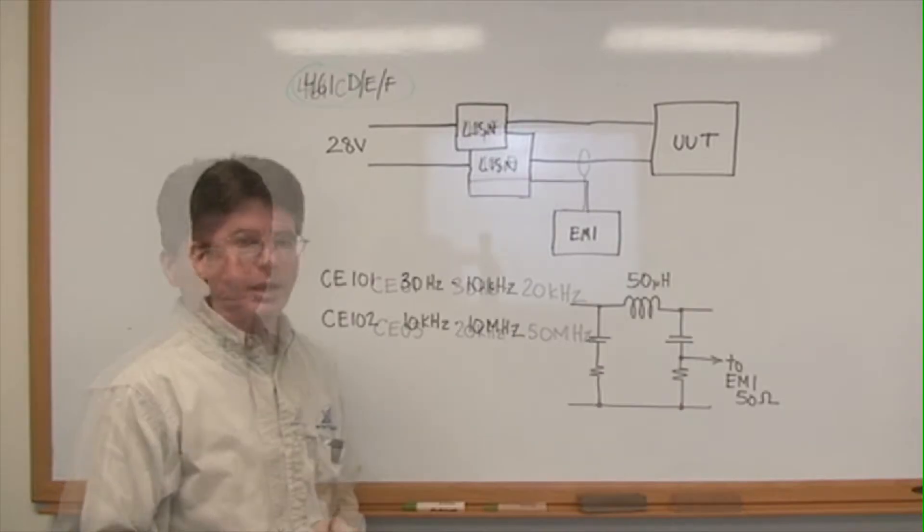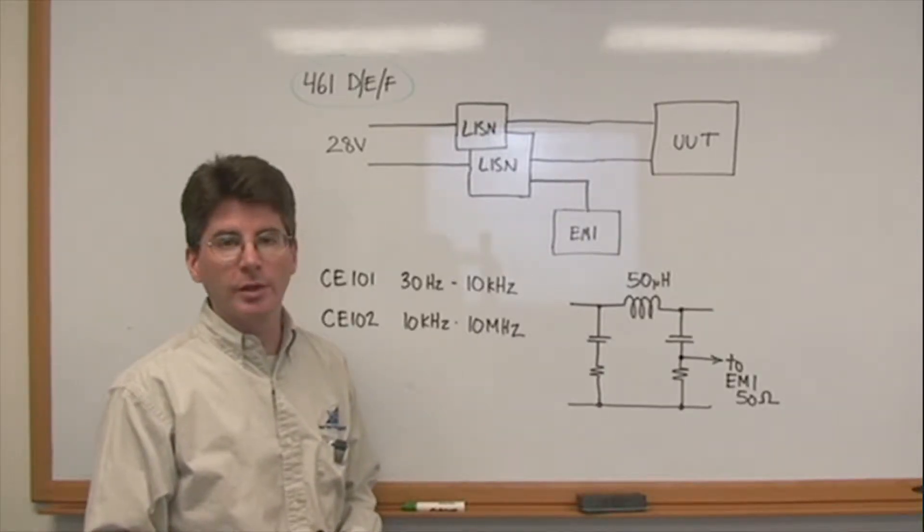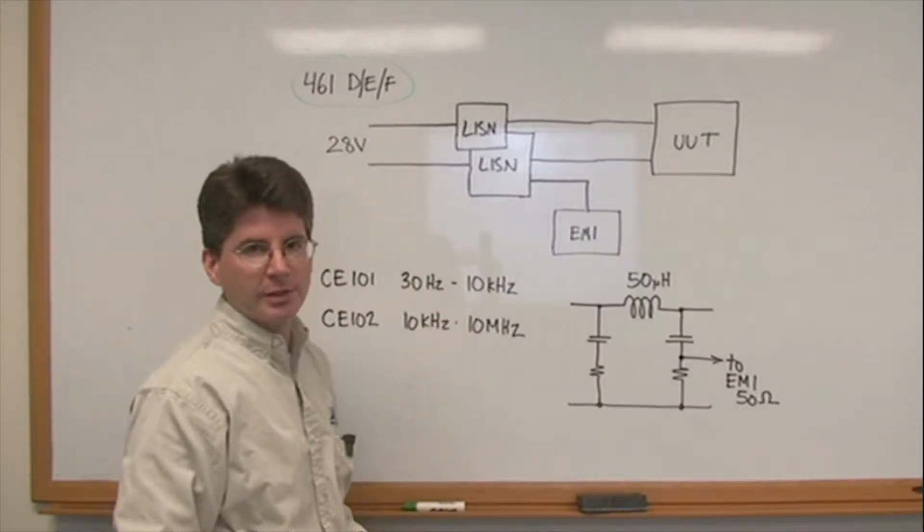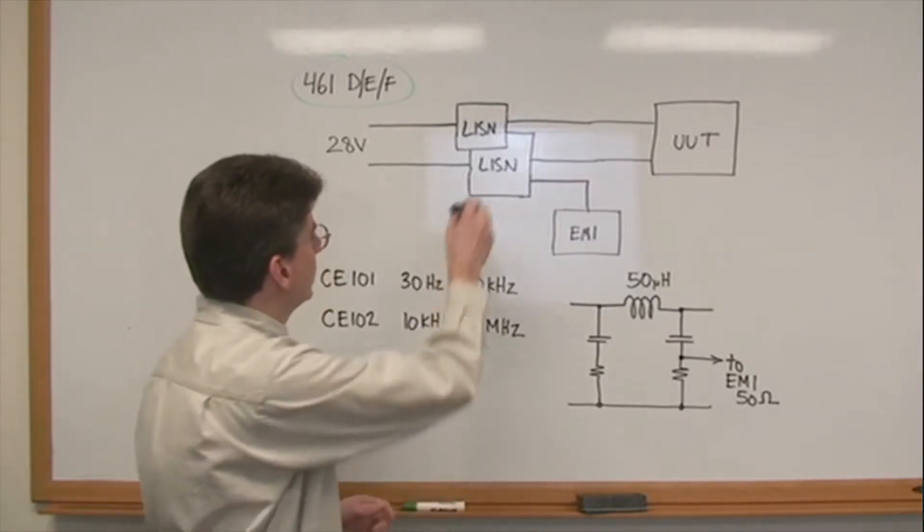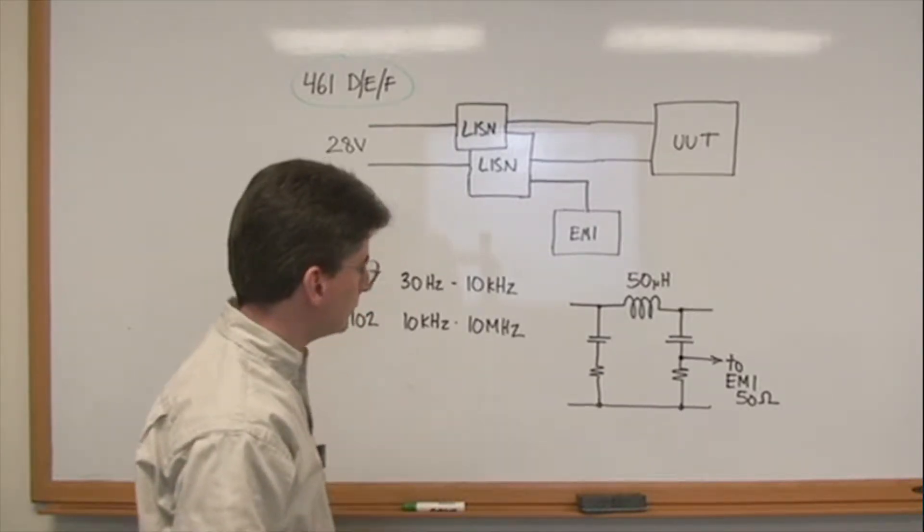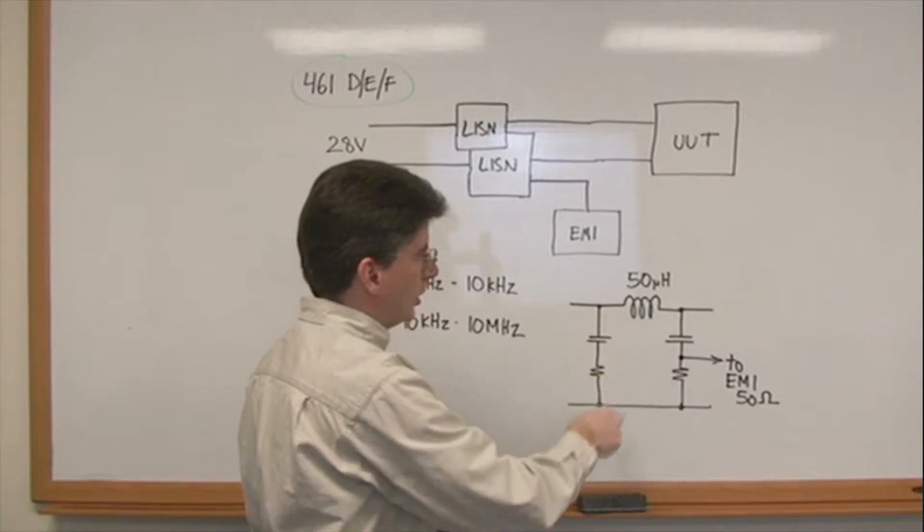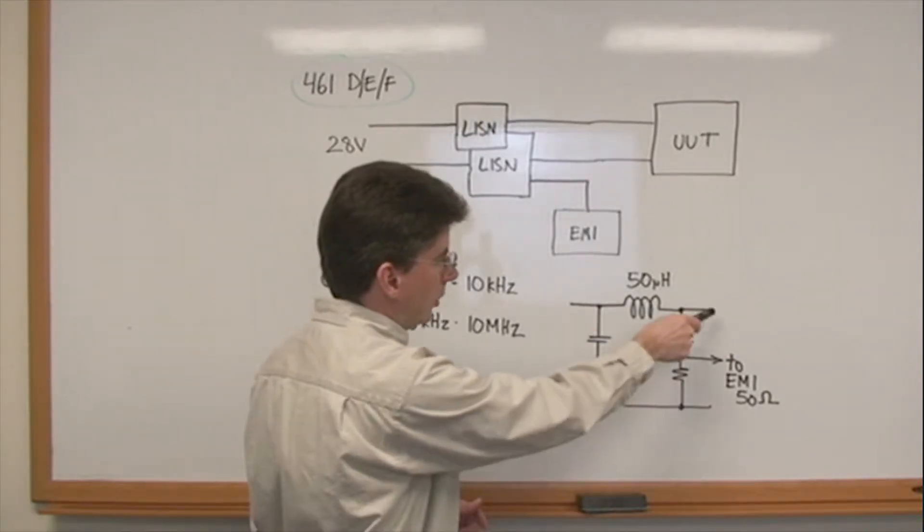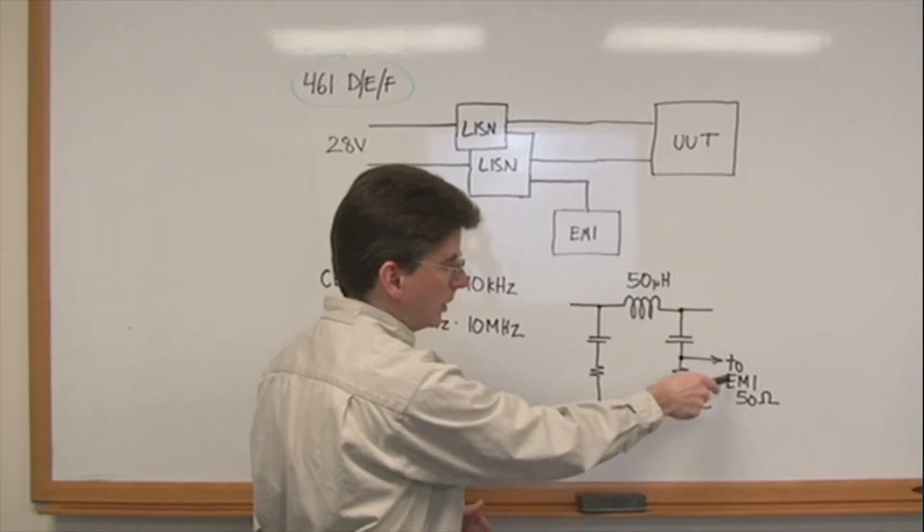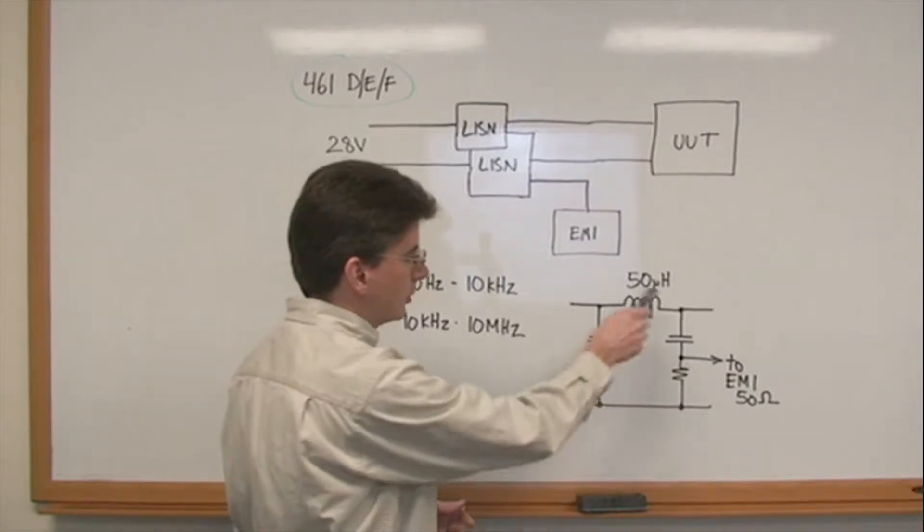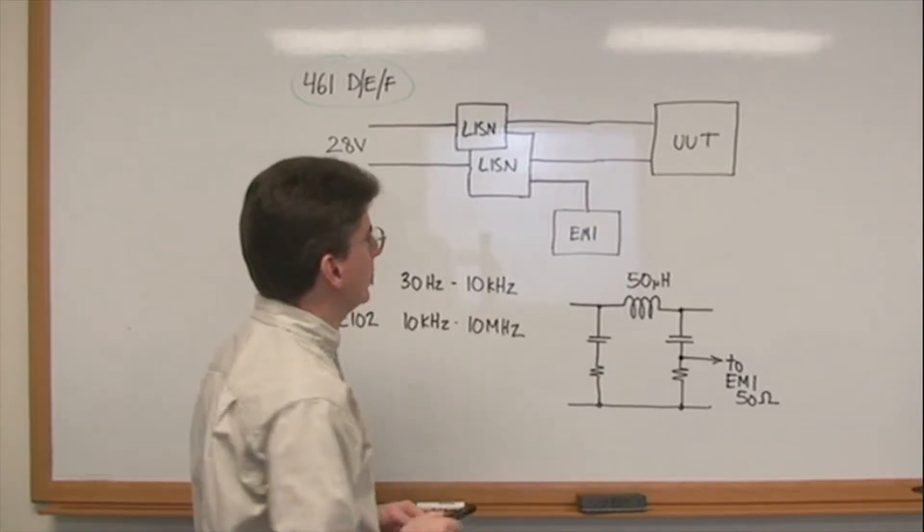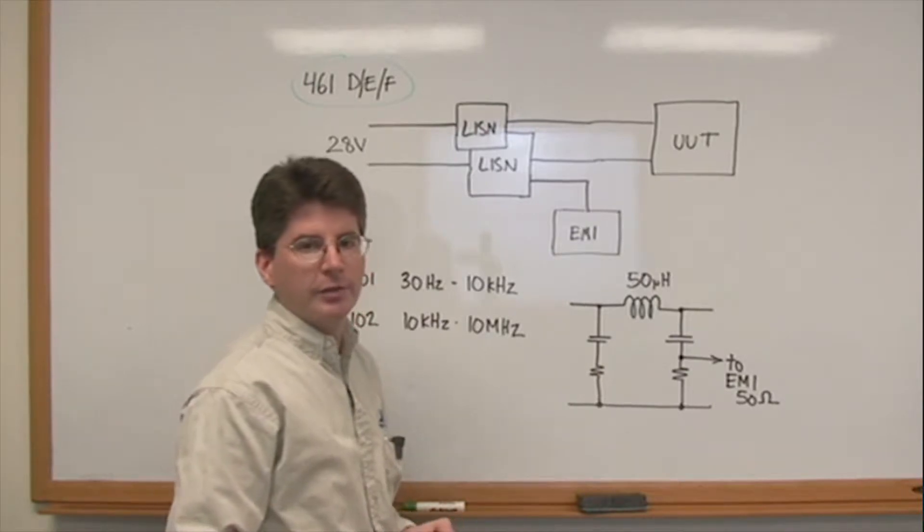This is the setup for MIL-STD-461 revisions D, E and F. This setup uses a LISN or line impedance stabilization network, and the LISN is placed between the 28 volt supply and the unit under test or DC-DC converter. A schematic of the LISN is shown here, but it is basically a large inductor, and on the converter side or the unit under test side there is a capacitor where we plug into the EMI analyzer and we will measure the noise in this manner. So the output of the LISN goes directly to the EMI analyzer. The other LISN on the other line is terminated into 50 ohms.